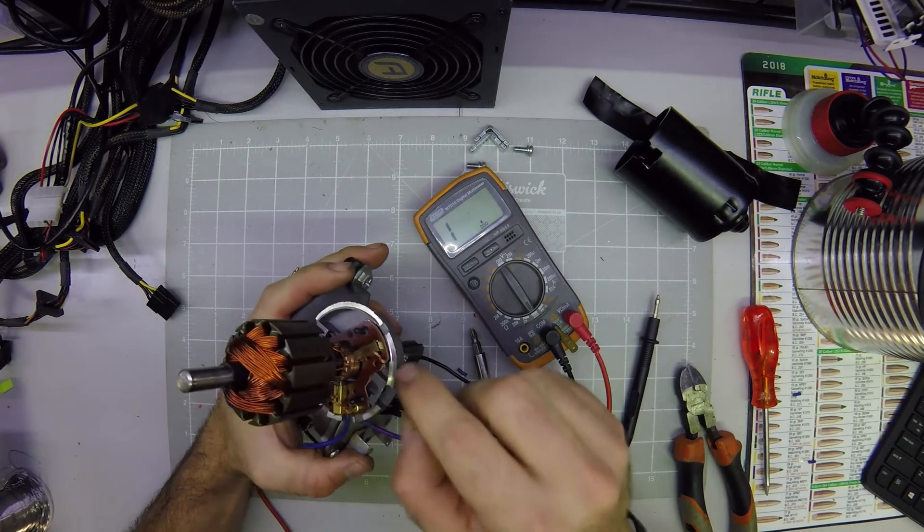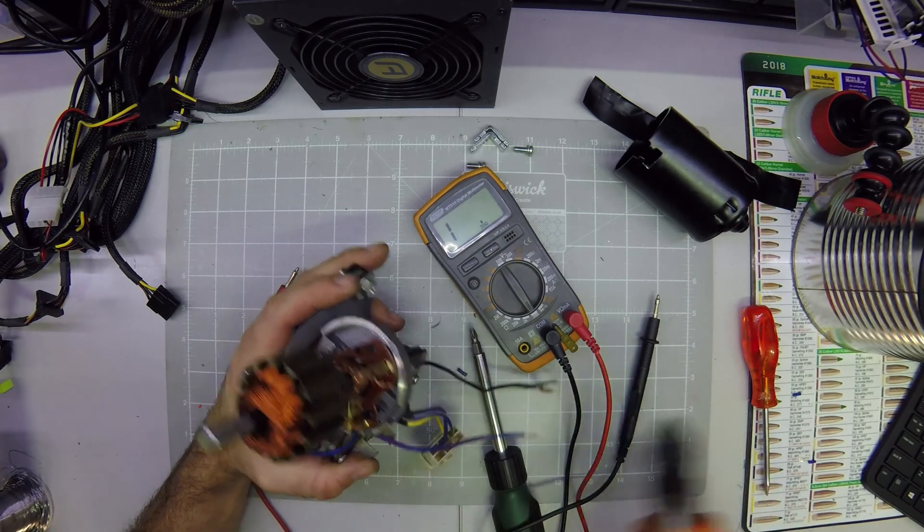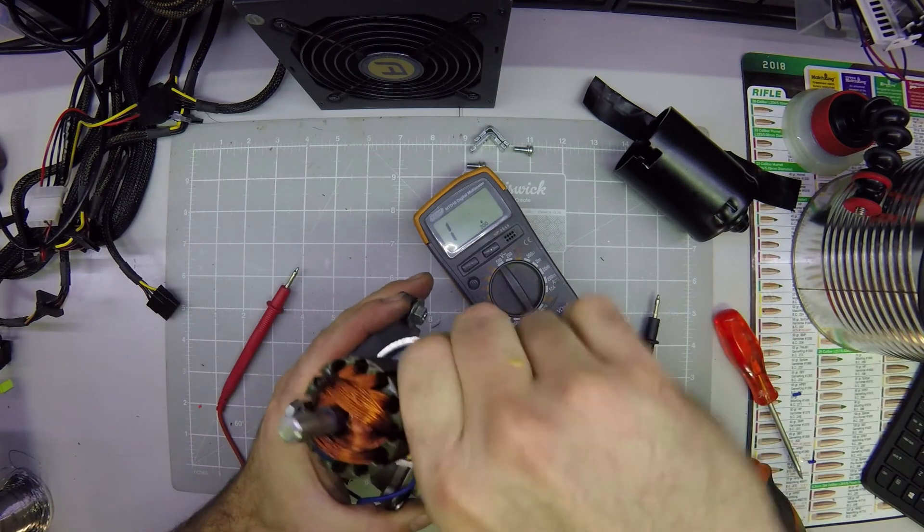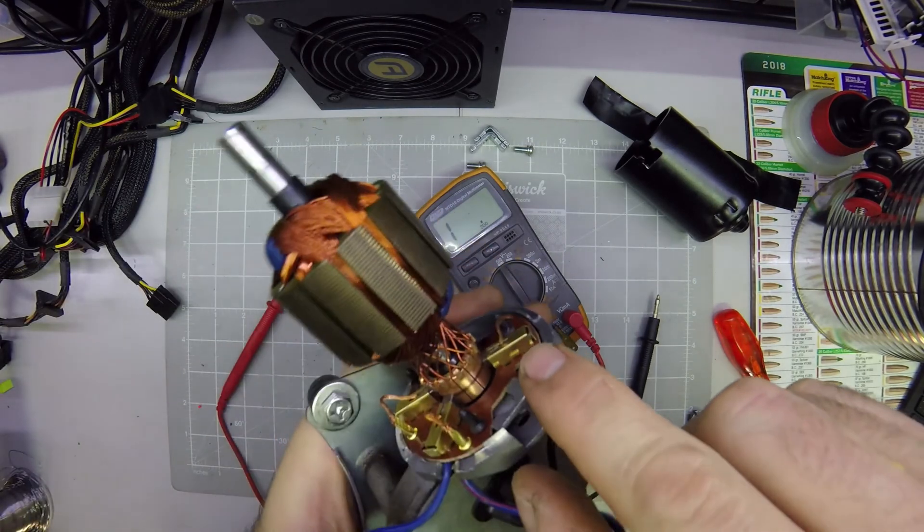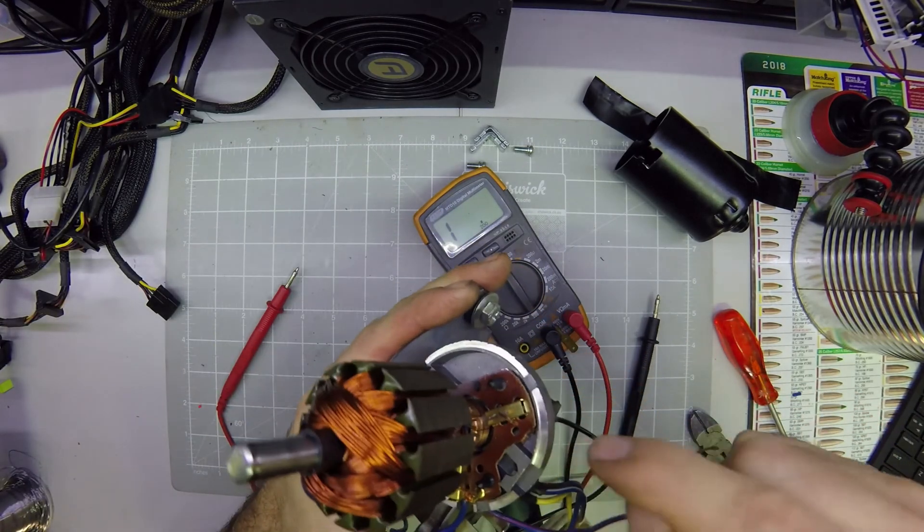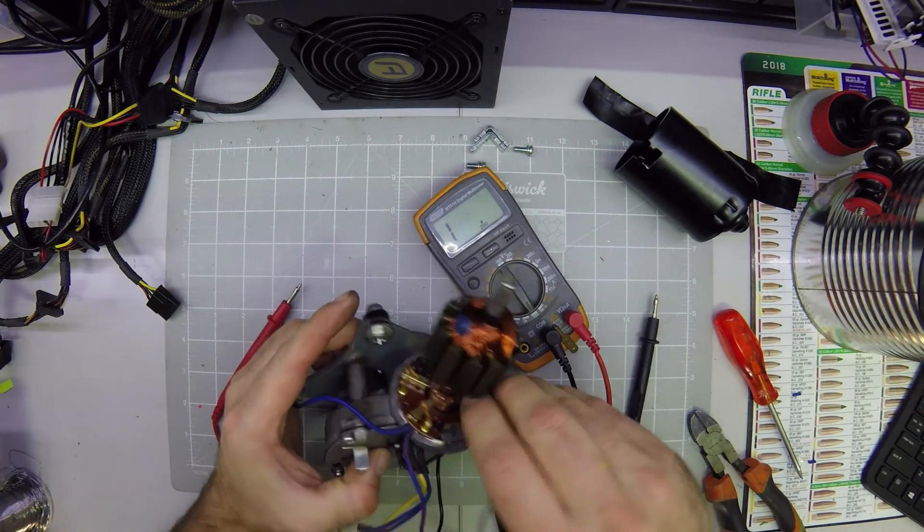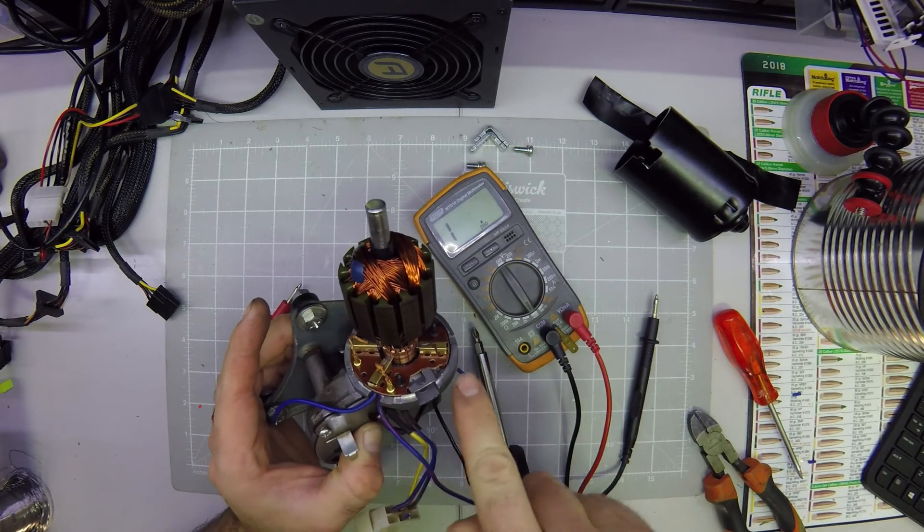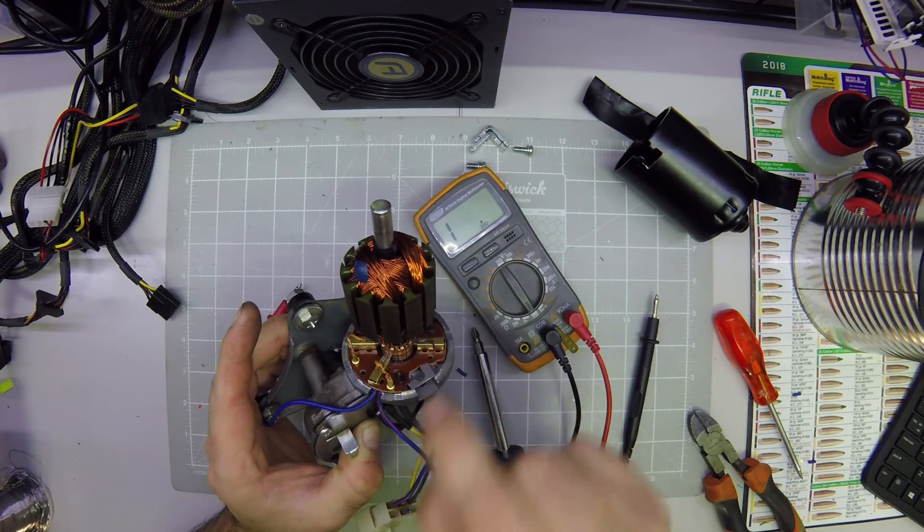So now what we need to do is we need to take away this wire. We need to cut it. And this brush is no longer connected to the frame. Now what we need to do is we need to get a wire in here and to this brush which will connect directly there and no longer to the frame.